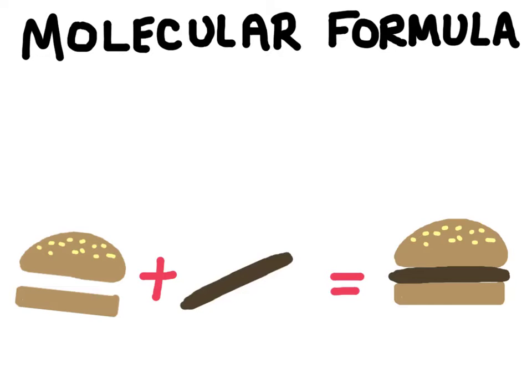For example, octane has the molecular formula of C8H18, so it's a compound that contains only carbon and hydrogen, and we have 8 carbons and 18 hydrogens.